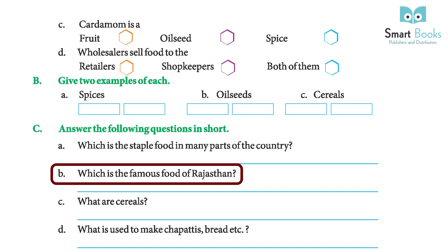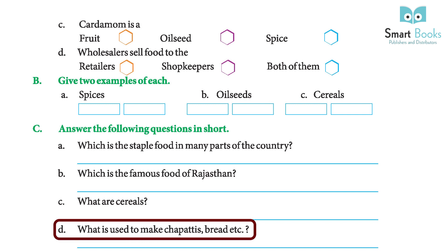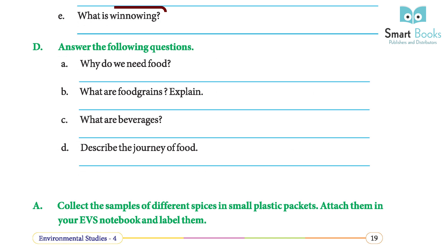Which is the famous food of Rajasthan? Answer: dal bati churma. What are cereals? Answer: food grains like rice, wheat, oats, maize, and millet are called cereals. What is used to make chapatis and bread? Answer: wheat flour is used to make chapatis and bread.